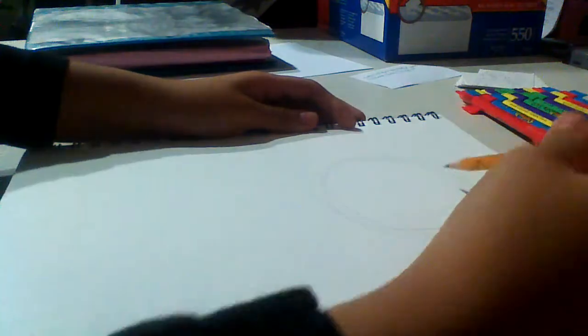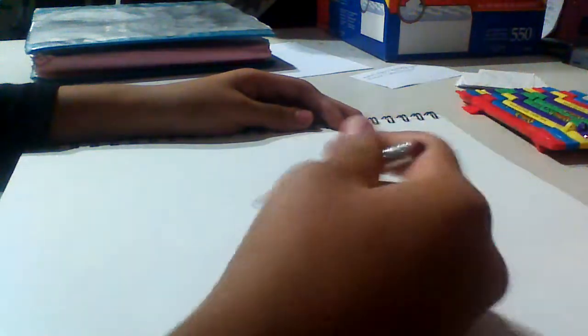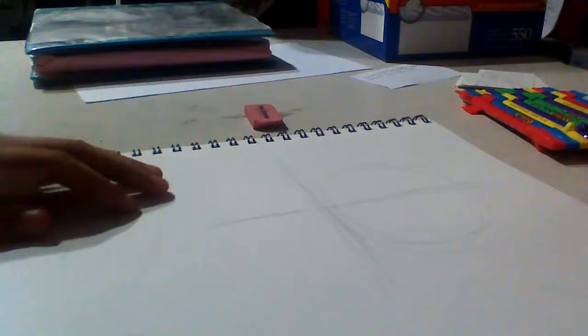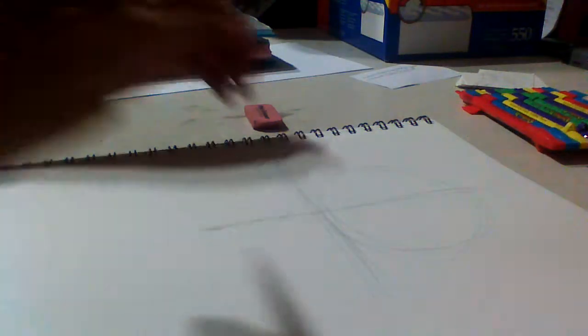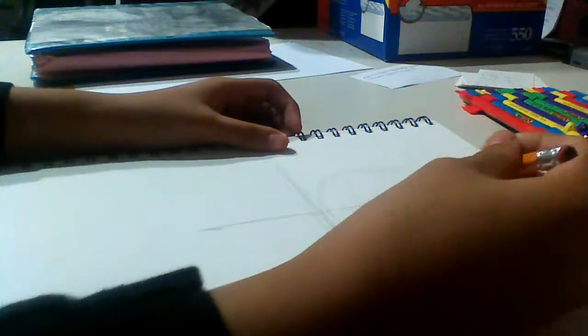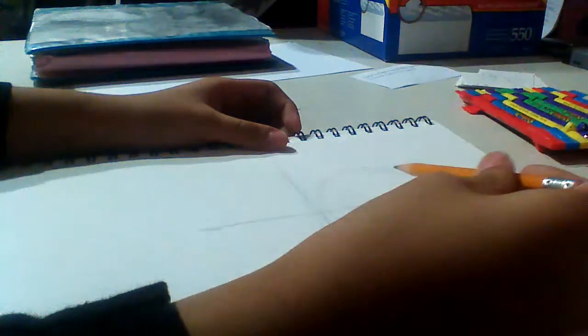For the front view, just start with a circle. Doesn't have to be perfect, just make a circle. Then you're going to take one line straight down, and then another one right here on the bottom of the circle. I'm just going to make this for beginners.